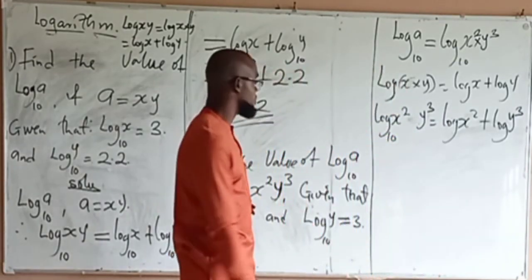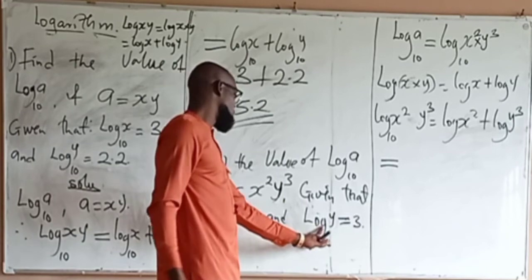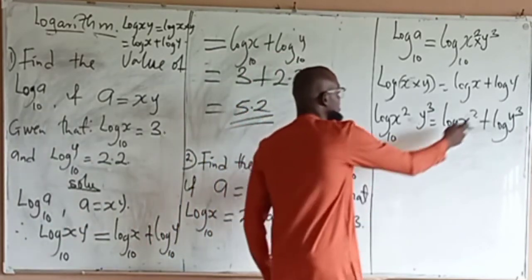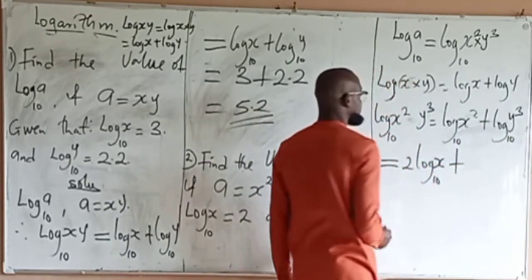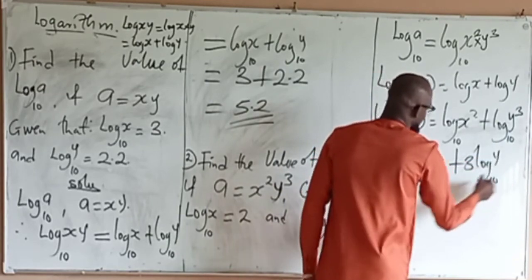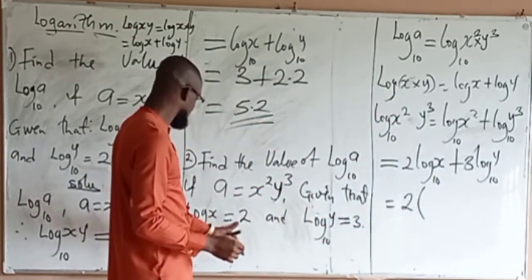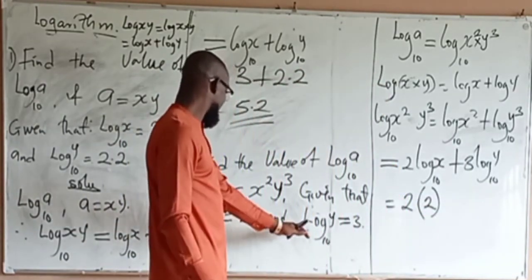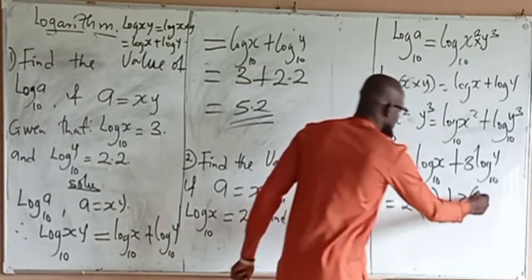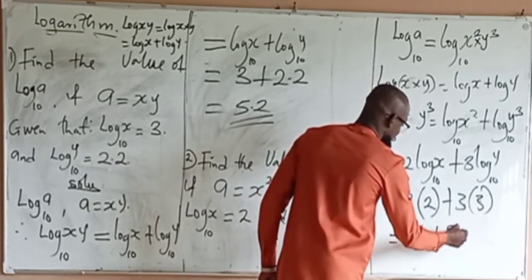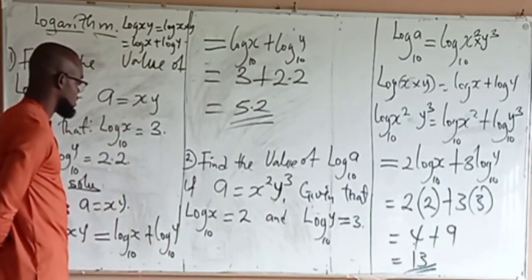So applying the power rule: 2 log x plus 3 log y. Now substituting: log x to base 10 equals 2, and log y to base 10 equals 3. So we have 2 times 2 equals 4, plus 3 times 3 equals 9. Therefore 4 plus 9 equals 13. So log A to base 10 equals 13.